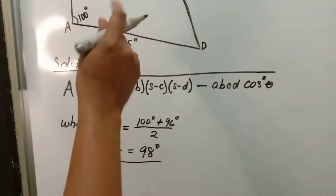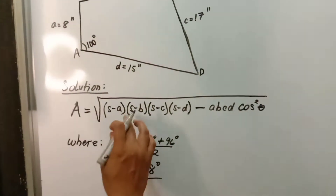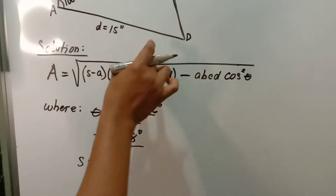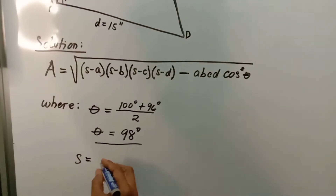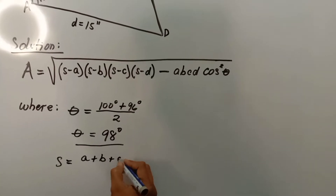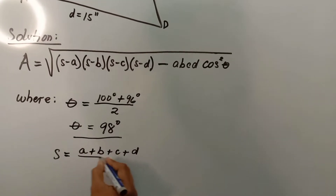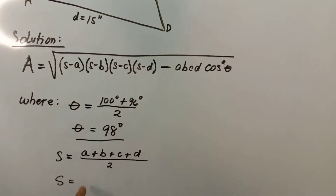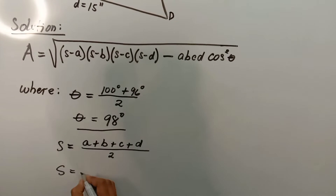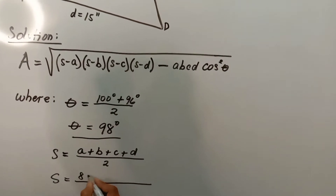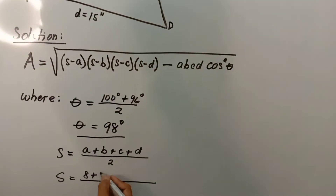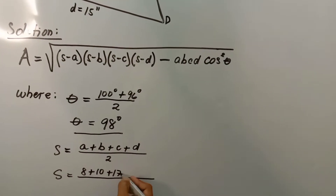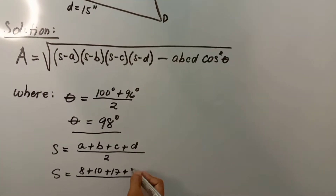Now we need to solve for s. s is equal to the sum of all four sides divided by two: s = (a + b + c + d) / 2. The four sides are: a = 8, b = 10, c = 17, and d = 15.